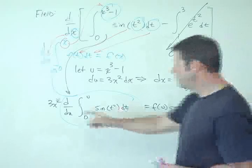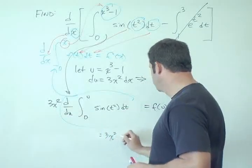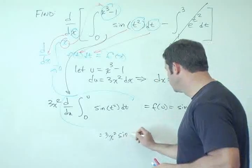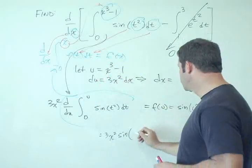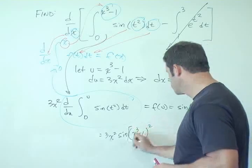So then the final answer, we have to include our 3x². So it equals 3x² times sin of, and what do we let u equal? x³ - 1 squared.